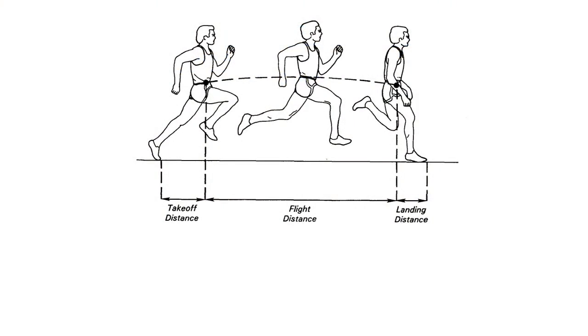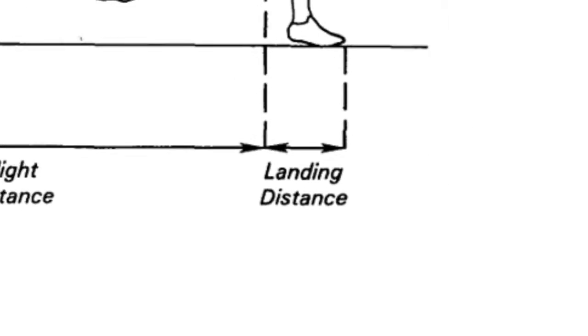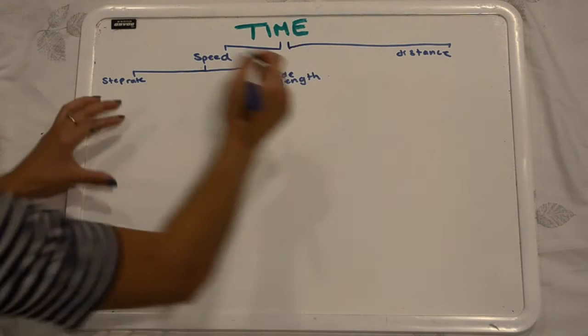If we look at the diagram of running stride, we can determine more mechanical subparts to add to the diagram. From the diagram, we can break stride length into three distances: takeoff distance, flight distance, and landing distance. The equation for the total stride length would then be stride length equals all of these distances added together. So we can now add these variables to the flow diagram.